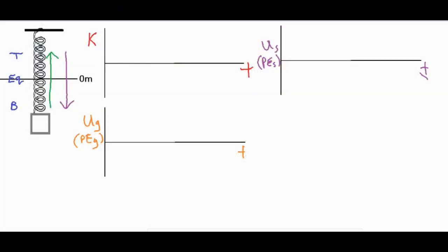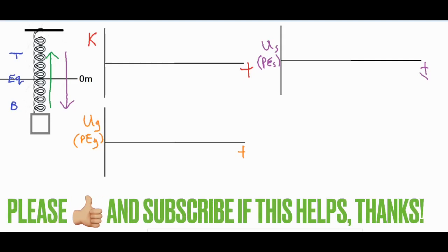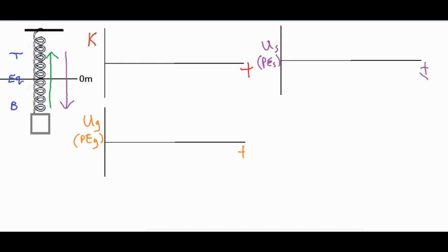In this video we're going to be taking a look at some simple harmonic motion with a block that is oscillating back and forth being attached to a spring. We're going to be taking a look at three different graphs: one of kinetic energy, gravitational potential energy, and spring potential energy. And then from there we're also going to solve for the spring constant by analyzing these graphs and getting the period.